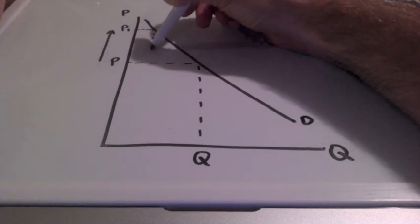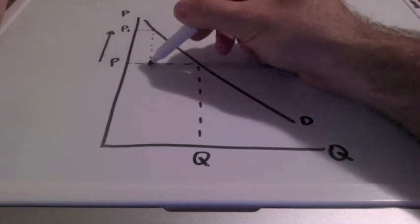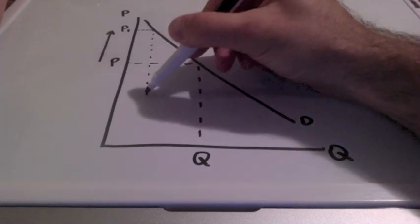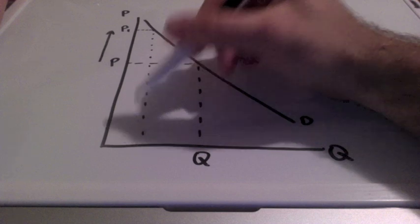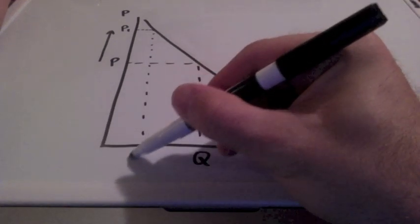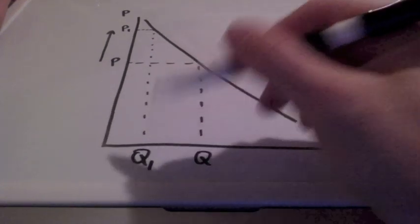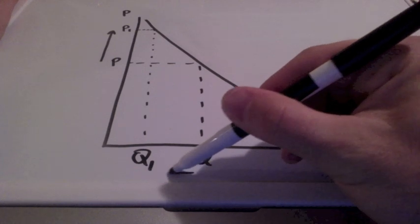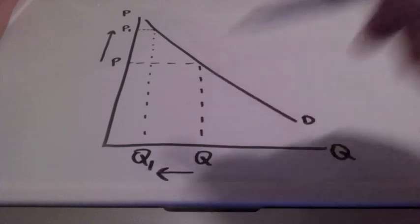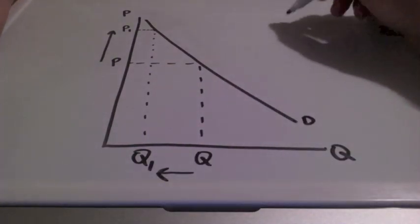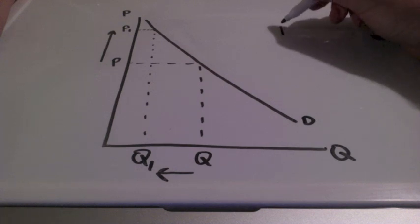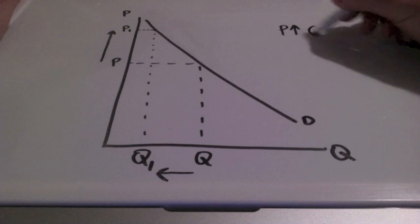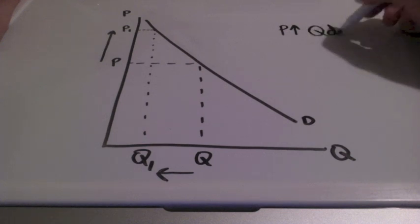Watch what happens to quantity demanded. Our quantity demanded is going to decrease. So when prices of goods increase, our quantity demanded, D representing demanded, will go down.